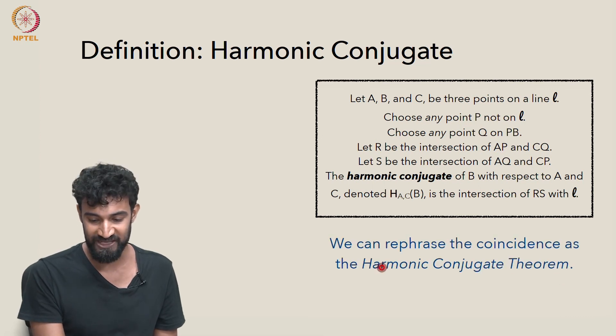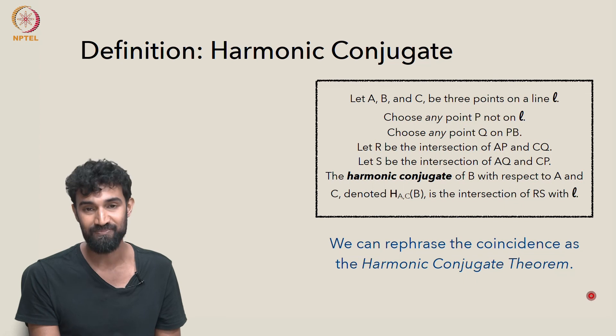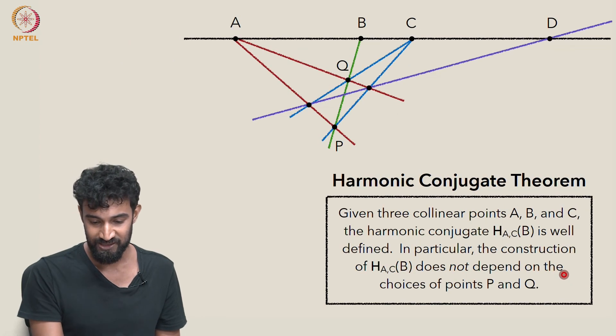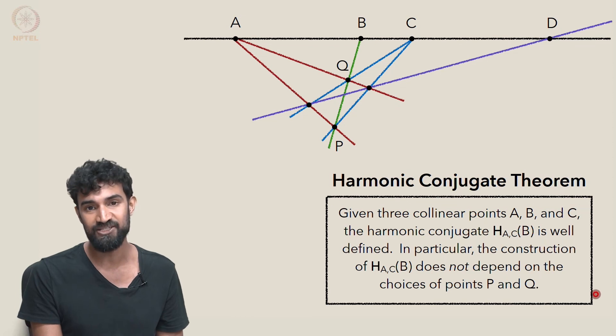So we can actually rephrase this coincidence as the harmonic conjugate theorem. And in that case, what the theorem states is if you follow this construction, HAC of B does not depend on the choices of points P and Q.